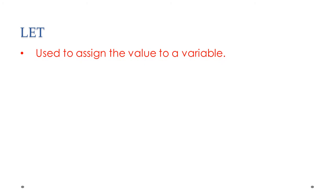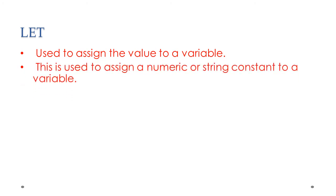The first statement in QBasic is LET. LET is used to assign a value to a variable. A variable is any character from A to Z. The value can be a number, a name, an address, or whatever you are going to store. LET is used to assign a numeric or string constant to a variable. Numeric means a number value; string means a set of letters or a paragraph.